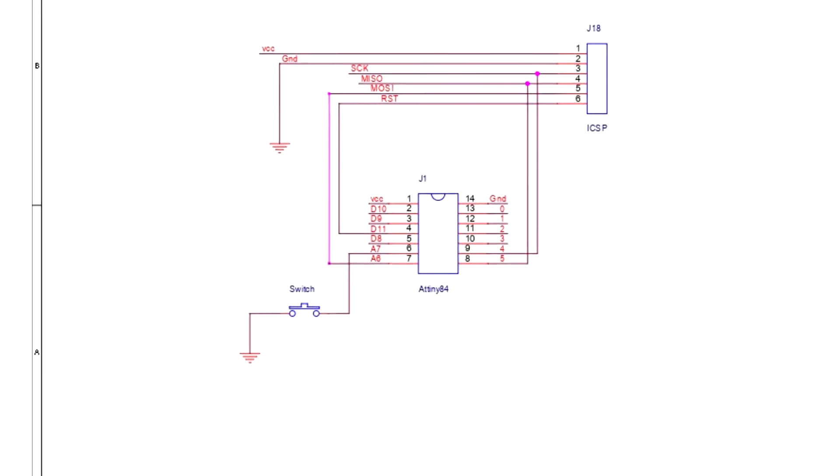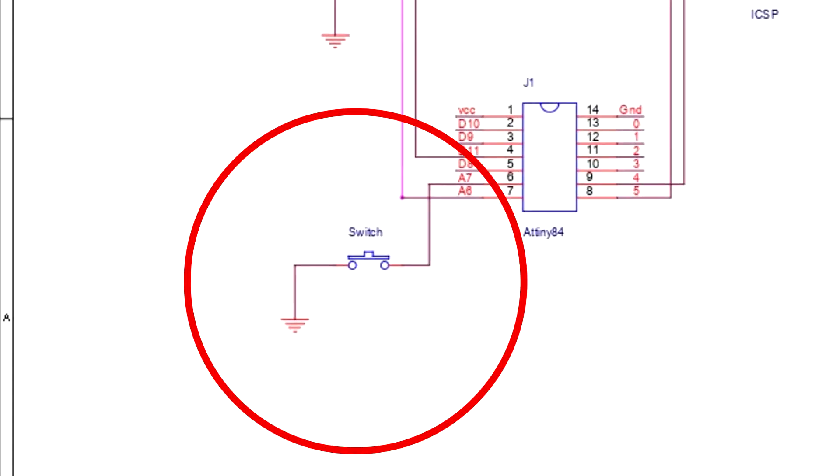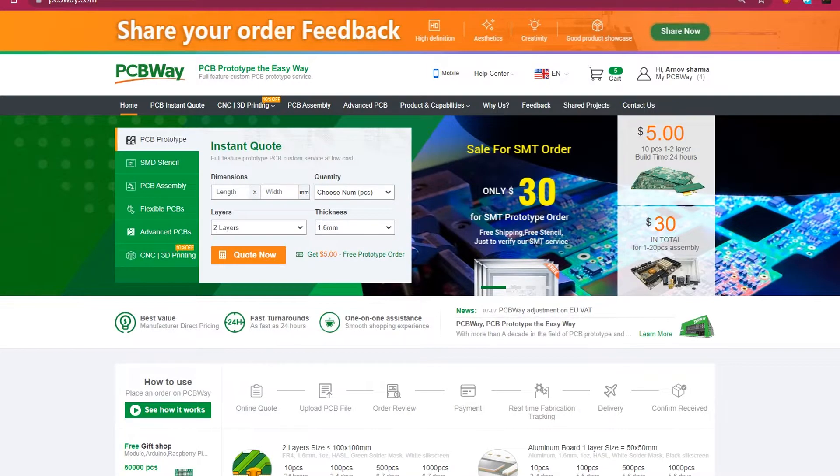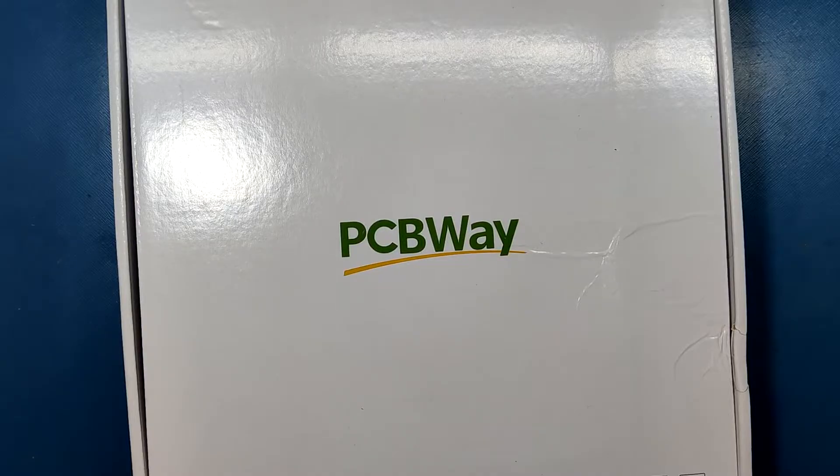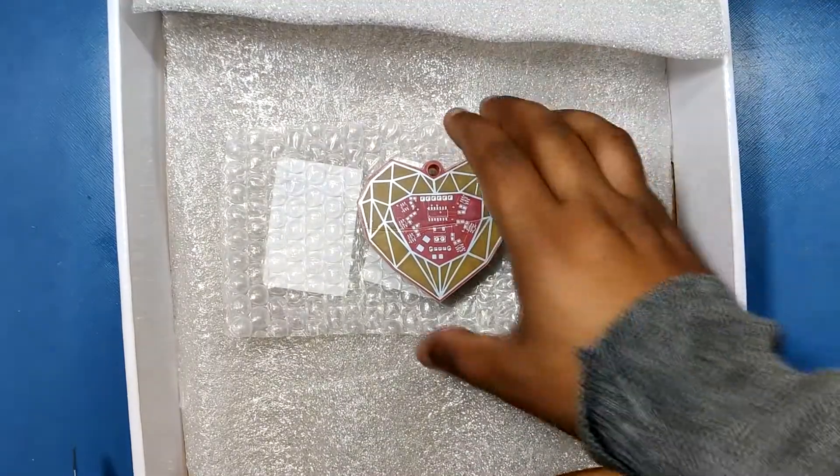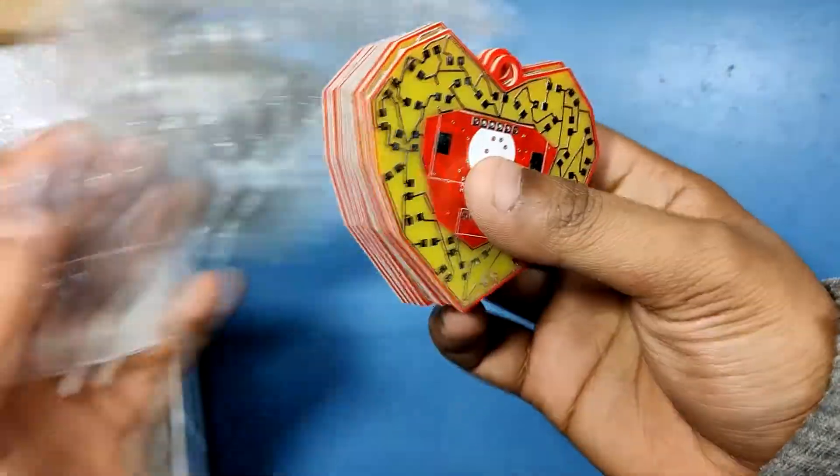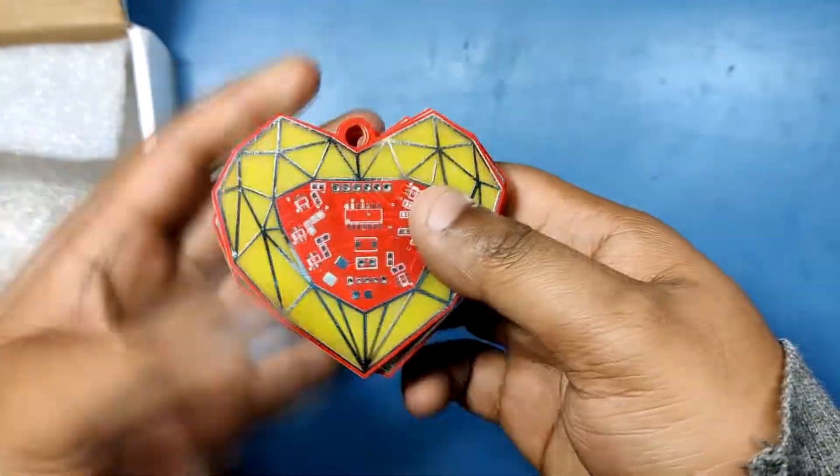We can change the LED glow pattern by pressing this button. After following this schematic and making a PCB board with these components, I sent the Gerber data to PCBWay for samples. I received the PCBs in a week which was really fast.